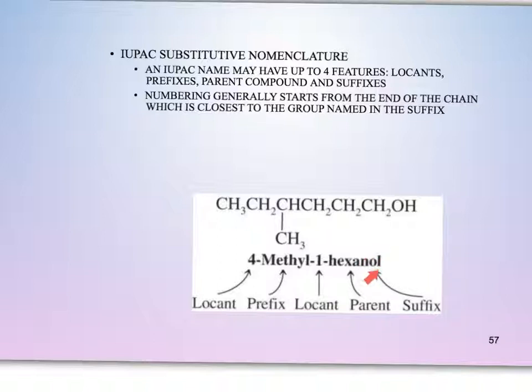For example, having an OL will indicate that we have an alcohol. So as we go through this, remember that the numbering will generally start from the end of the chain which is closest to the group named in the suffix. So in this case right here, we would want this to be carbon 1 because it's closest to the OH.